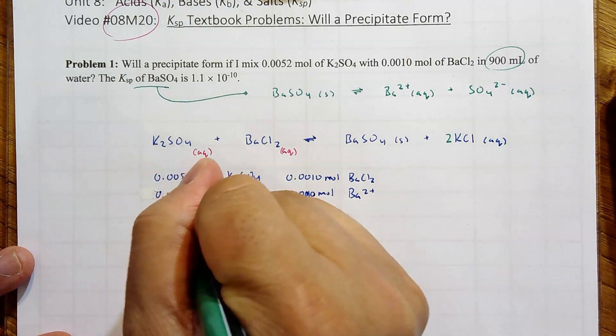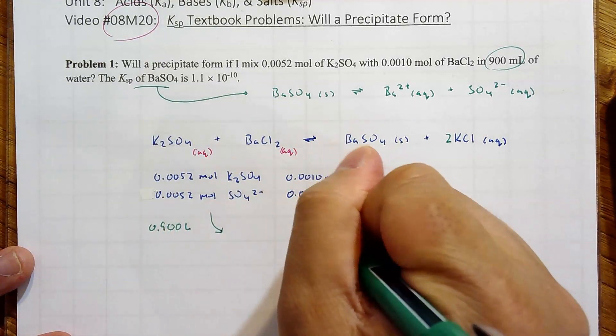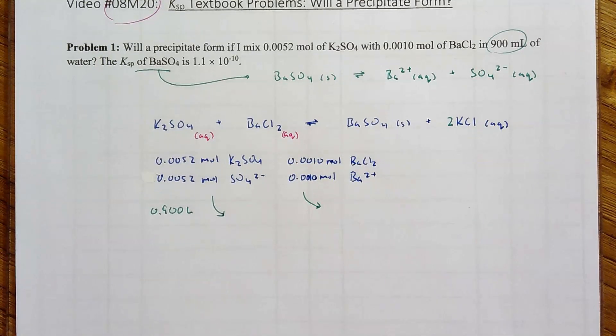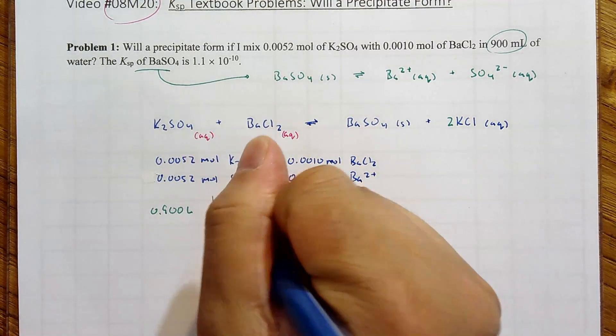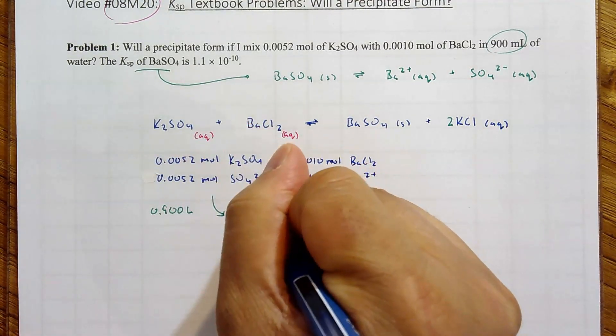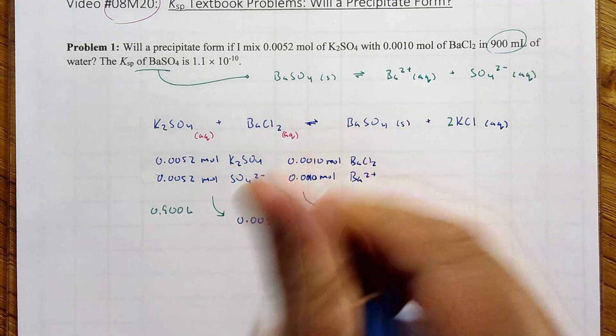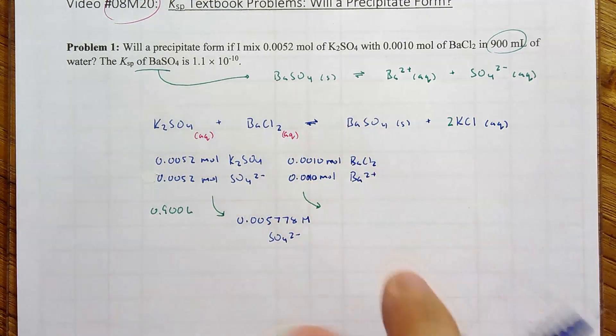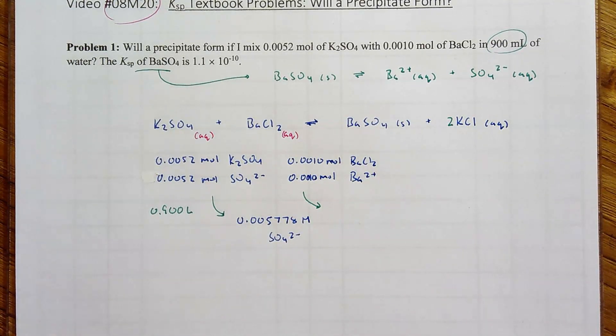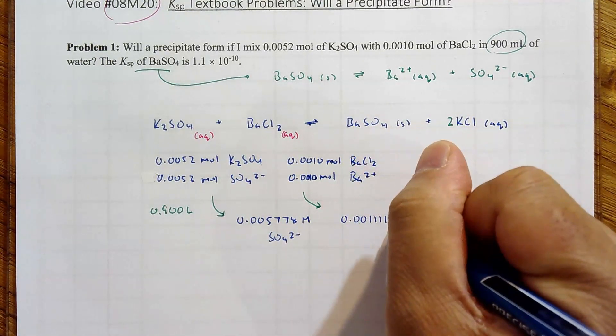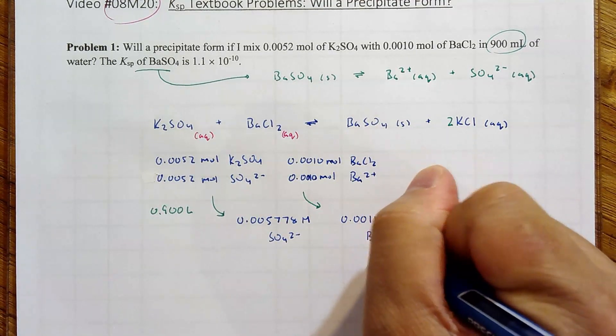And again, barium is a 1 to 1 ratio with its salt in this case. 0.0010 mole of barium 2 plus. Now the total volume is 900 milliliters. So 0.900 liters gives you your concentrations. You're dividing. 0.0052 divided by 0.9. A lot of places where we can go wrong, want to be very precise. And that's now a molarity of SO4²⁻.